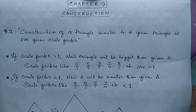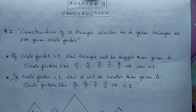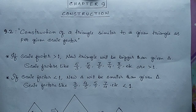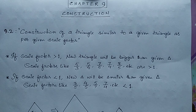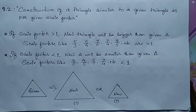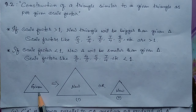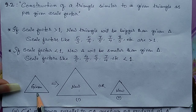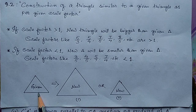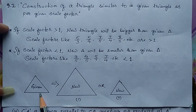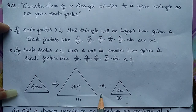In this type of construction, the question gives us a triangle, and asks us to construct another triangle similar to the given triangle. Now, as you know, triangles of different sizes can be similar, so we have two possibilities.